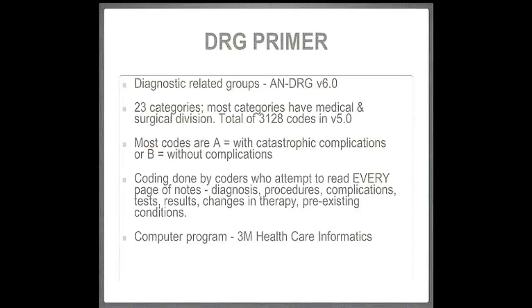An extremely important part of this categorisation is that you'll get a code, and then it's either going to be A or B. If you're an A, that means you've had what the classification calls catastrophic complications — which aren't always catastrophic, and aren't always what we would consider a complication. But sometimes the difference in funding for an A versus a B is a factor of more than double. So it's extremely important that we accurately code what's happening. Category B is without complications. Coding is done by our coders, some of whom are here — I know them personally and they helped put together some of this.